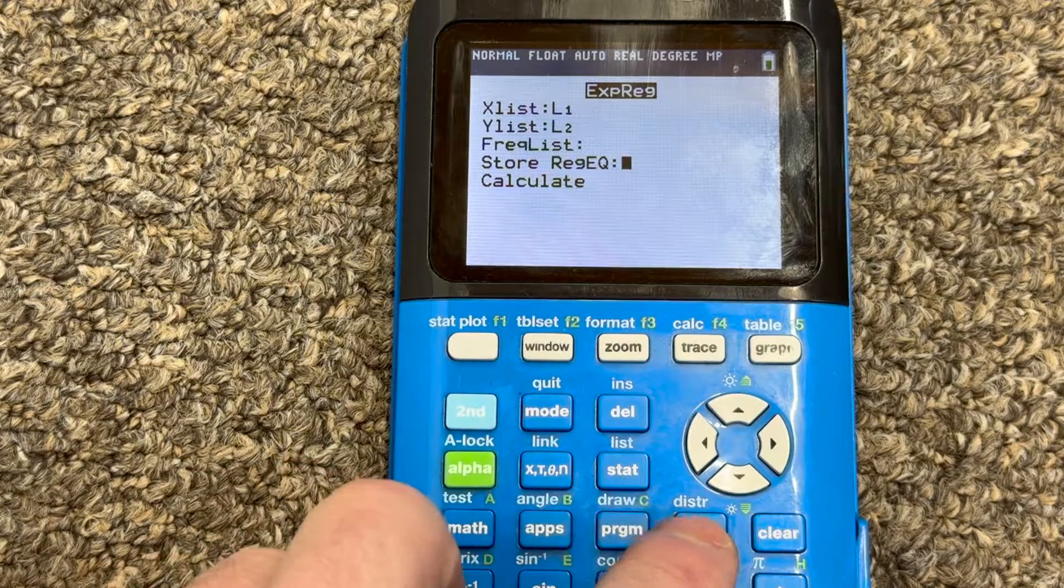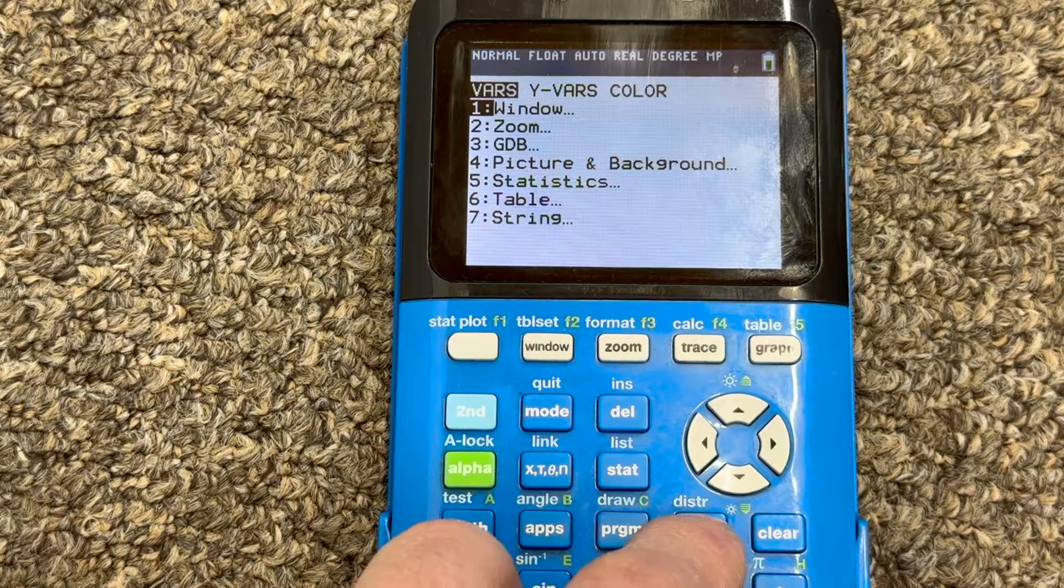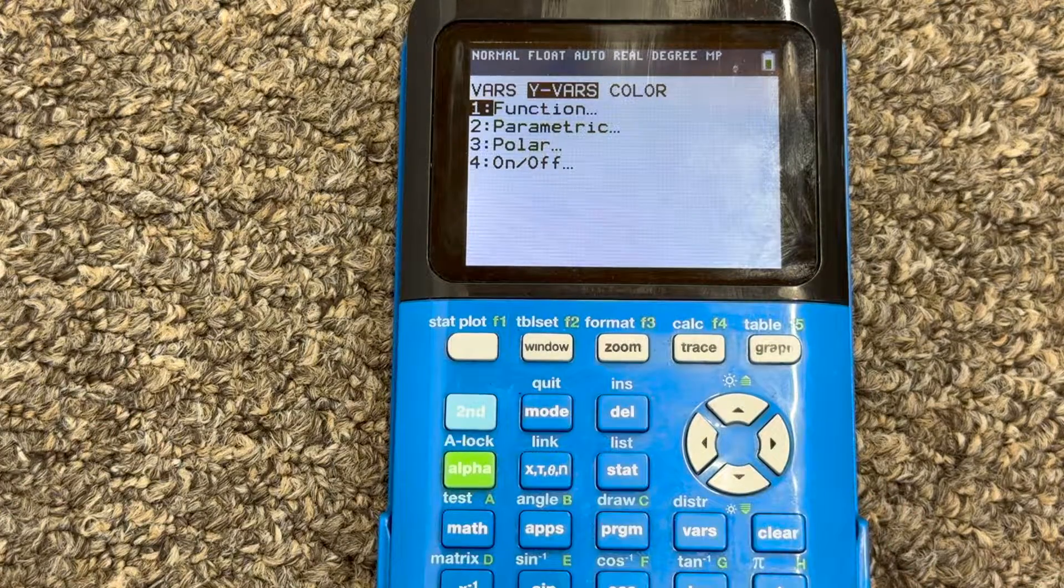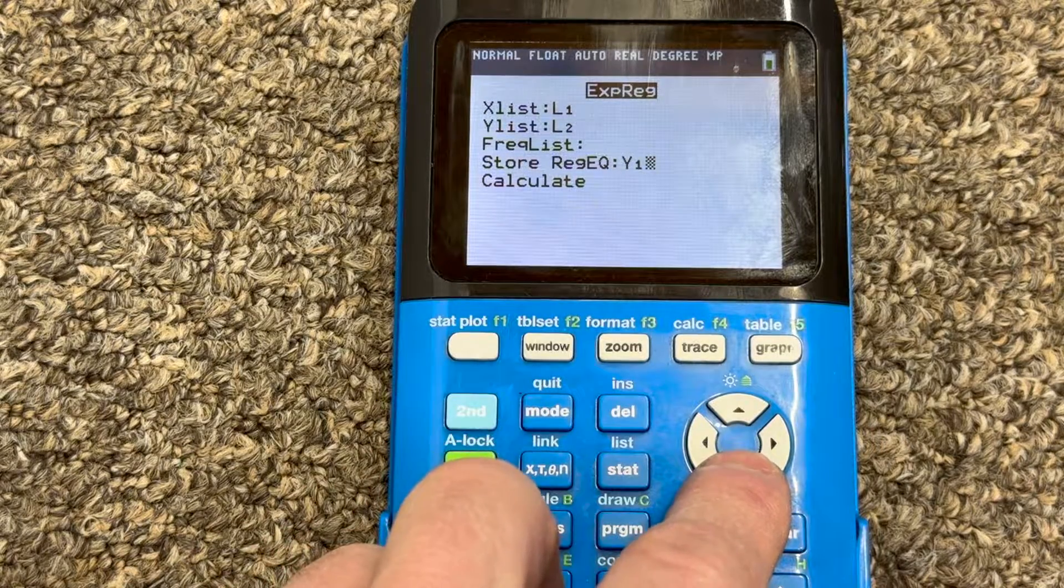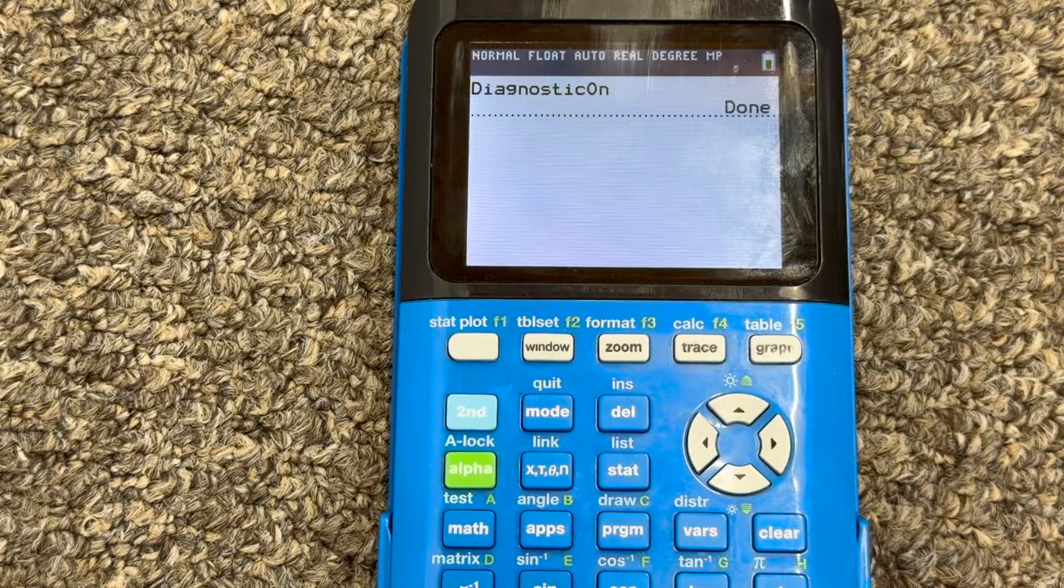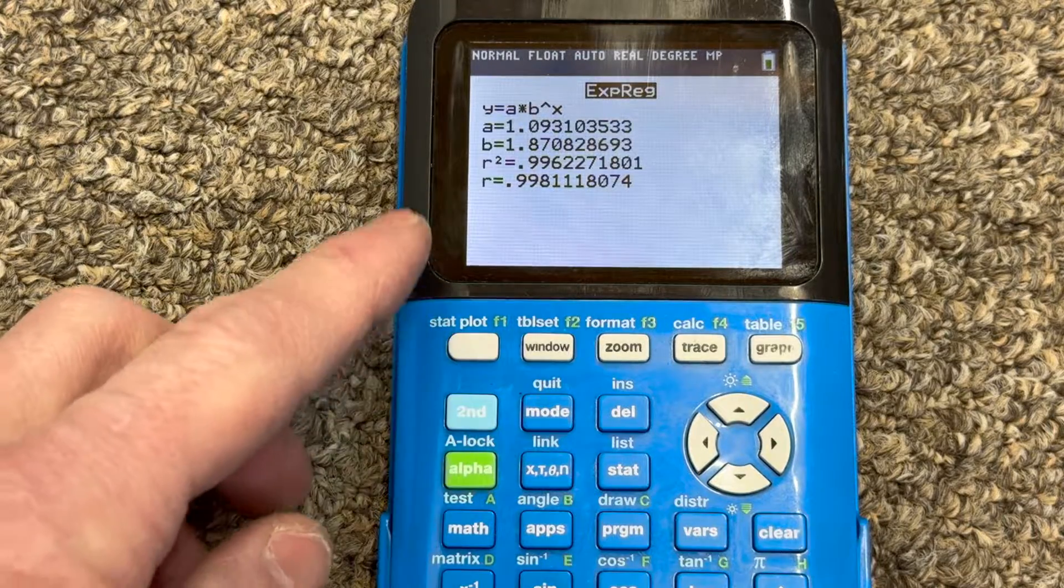Store regression equation, I'm going to go back to vars, variables, arrowed right to Y variables, function, enter, and enter again for storing it under list one, or Y1. Arrow down to calculate, press enter. And now you should see that R value.